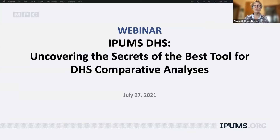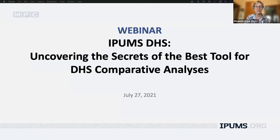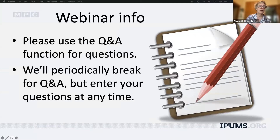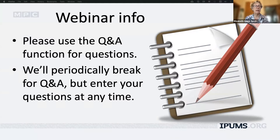It's 9:30 central time, so let's go ahead and get started. Thanks so much for joining us today. The demographic and health surveys are amazing data, and we're delighted to apply the IPUMS dissemination system to make this great data even more accessible. Today's webinar is IPUMS DHS: uncovering the secrets of the best tool for DHS comparative analyses. Please use the question and answer function at the bottom of your Zoom screen for questions rather than the chat. We'll be periodically breaking for Q&A, but enter your questions at any time. If we don't have time to get to all questions today, we will create a Q&A document posted on the website along with this recorded webinar.